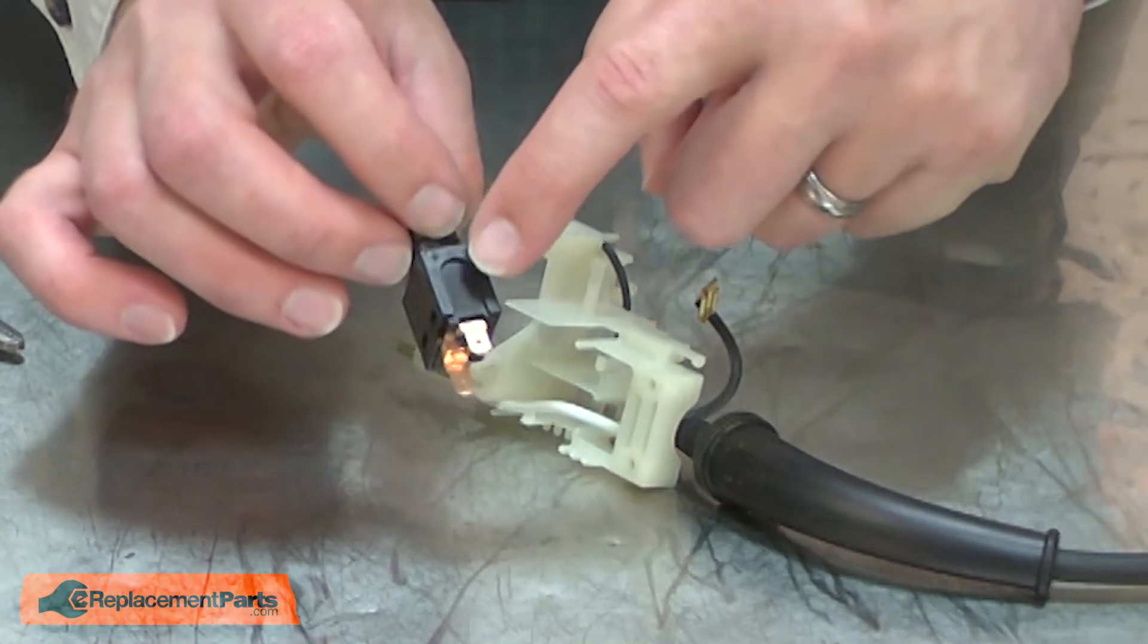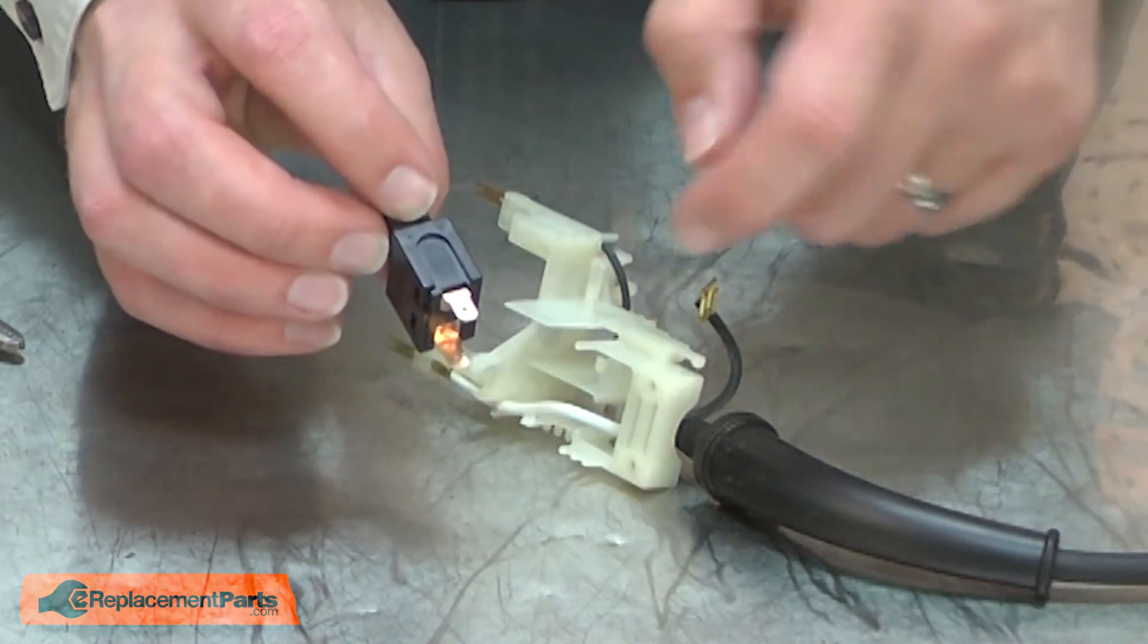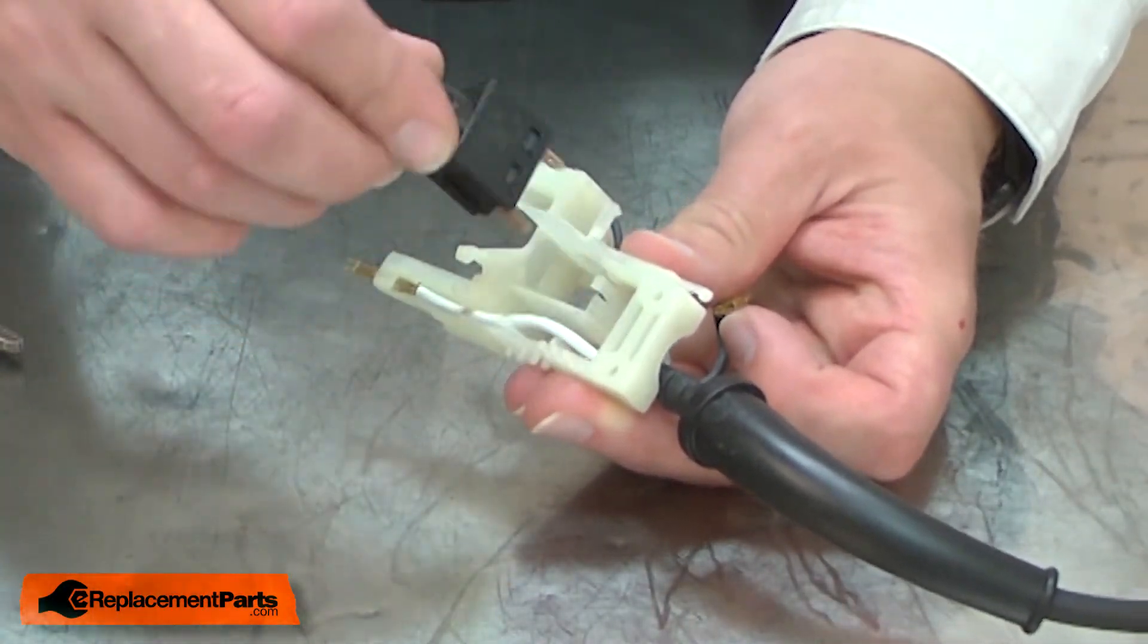Now I can install the new switch. You'll notice there's a couple of grooves milled on either side of the switch. These will determine the proper orientation of the switch. If it doesn't easily fit one way, just turn it around.